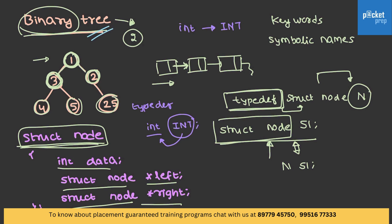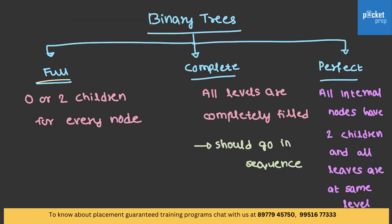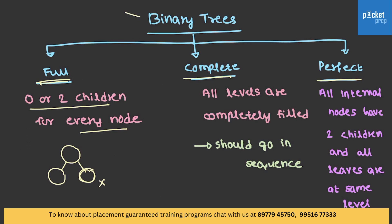Coming back to trees, we have different types of trees: full binary tree, complete binary tree, and perfect binary tree. In the case of a full binary tree, every node has 0 or 2 children. Generally we have 3 possibilities in a binary tree — 0, 1, or 2 children — but in a full binary tree, nodes can have either 0 or 2 children only.